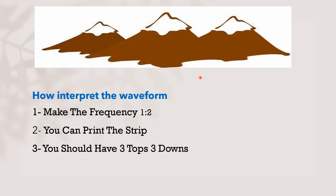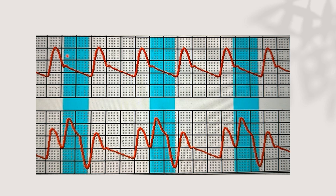Now we will discuss how to interpret the intra-aortic balloon pump. For interpretation, first set the frequency to one to two. You can print the strip on ECG paper. You should have three tops and three downs to interpret it. This is a normal waveform without augmentation shown at one to two frequency, with three tops and three downs — all of these should be visible on the strip.